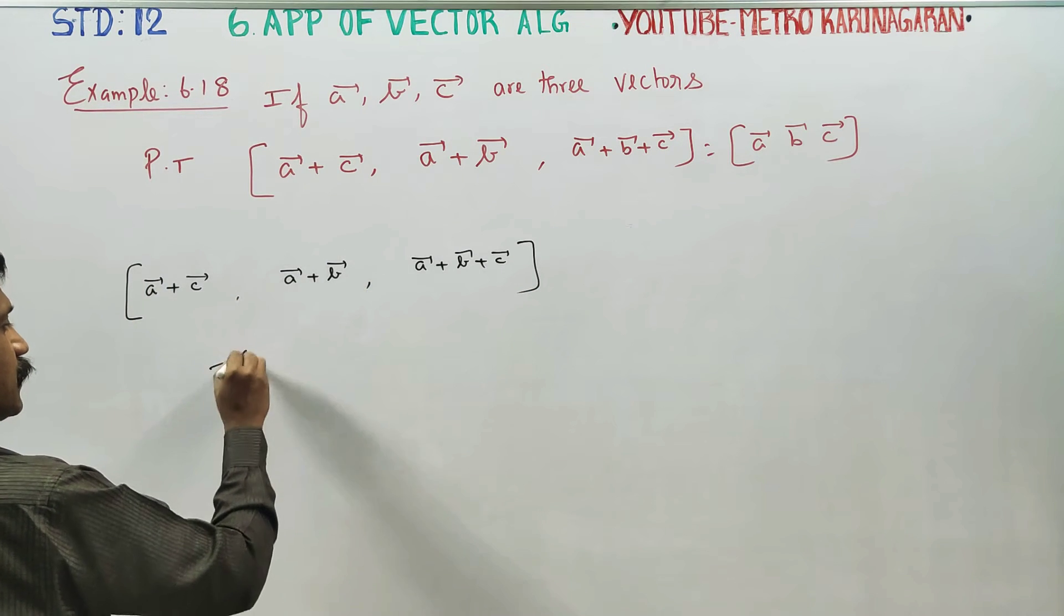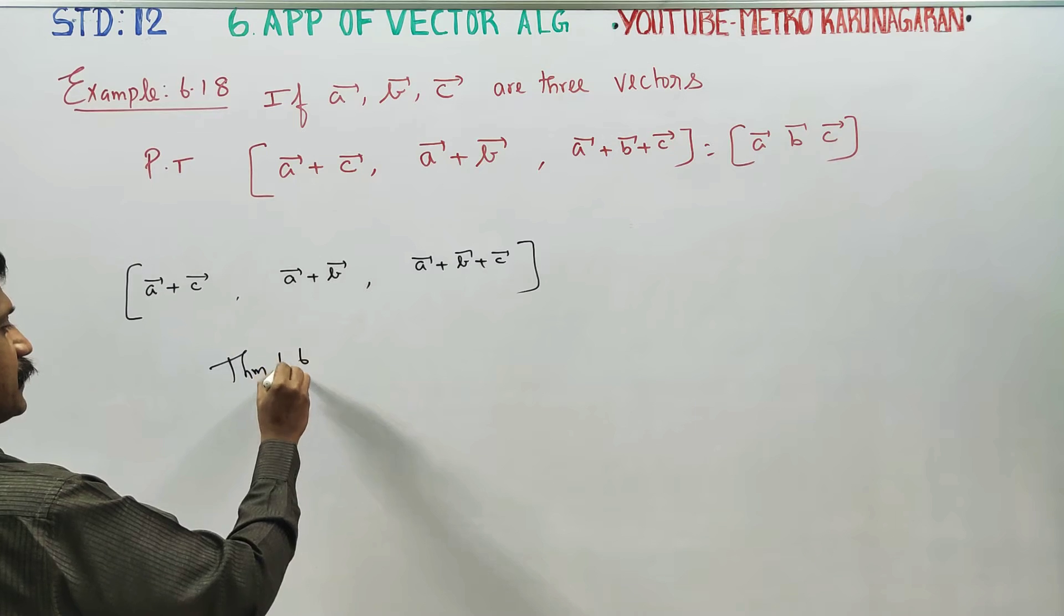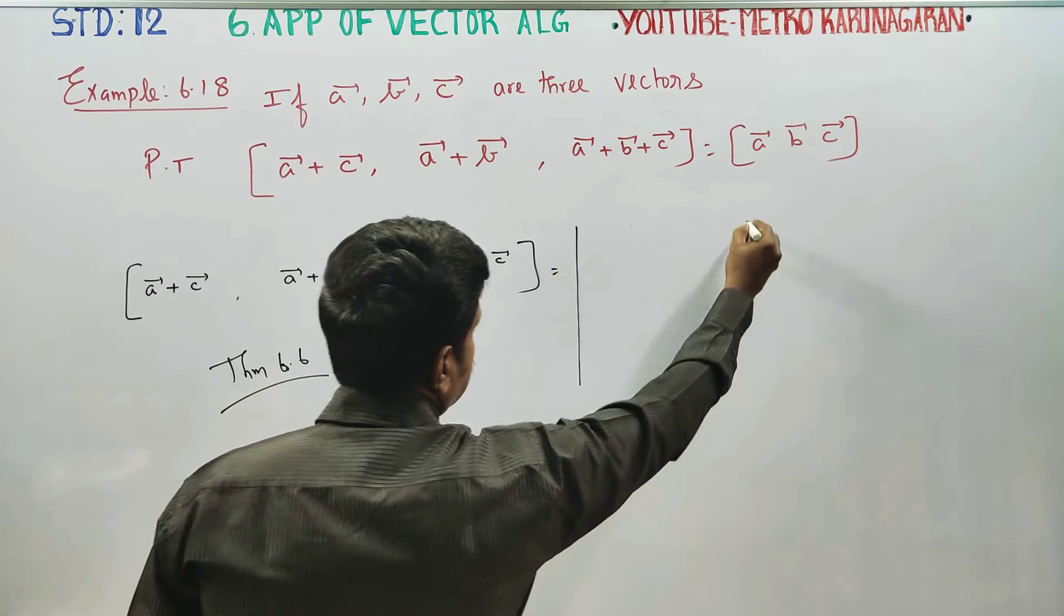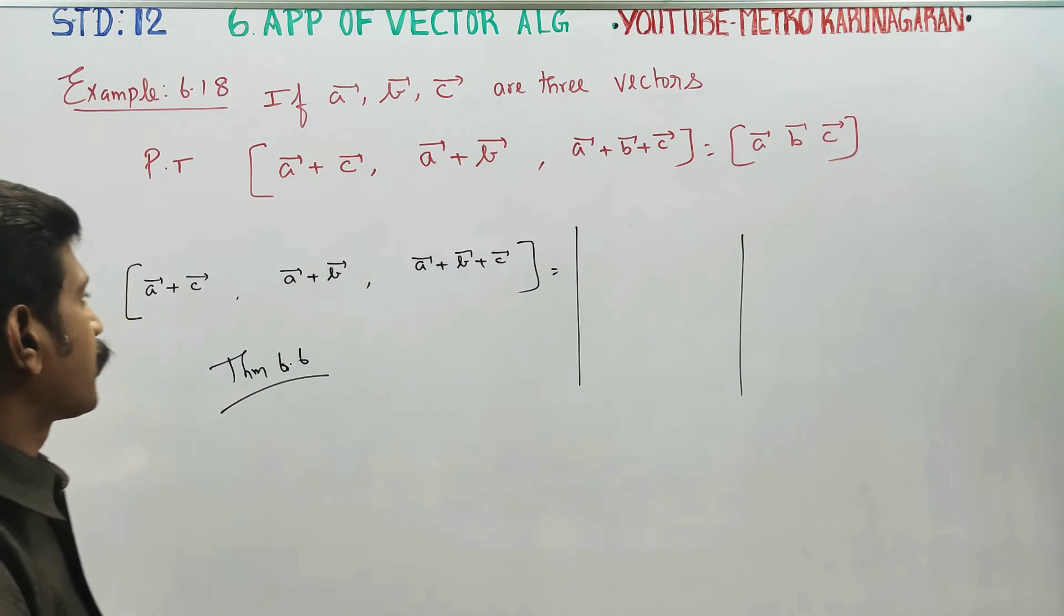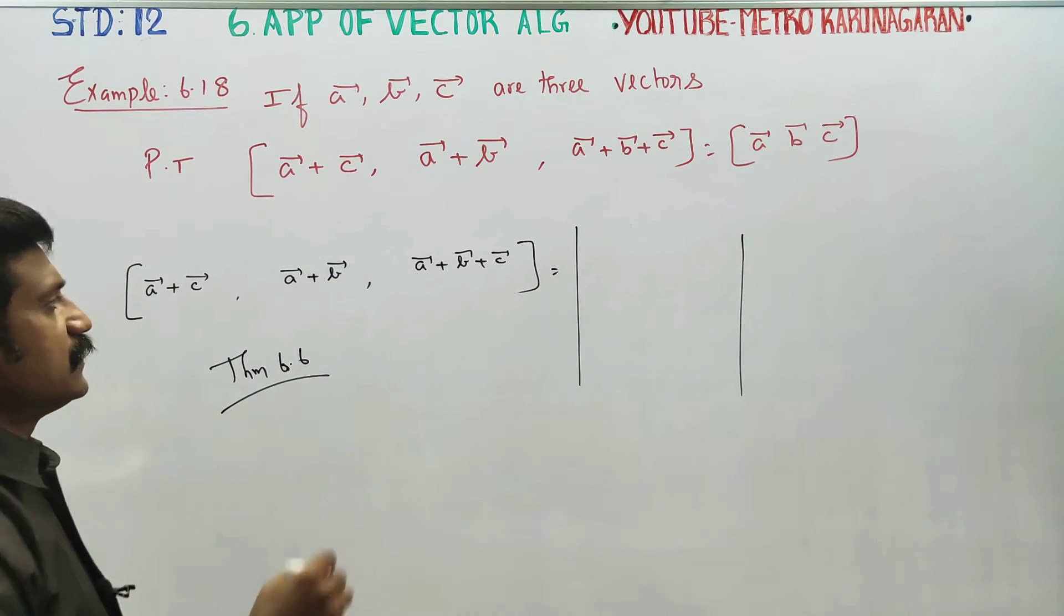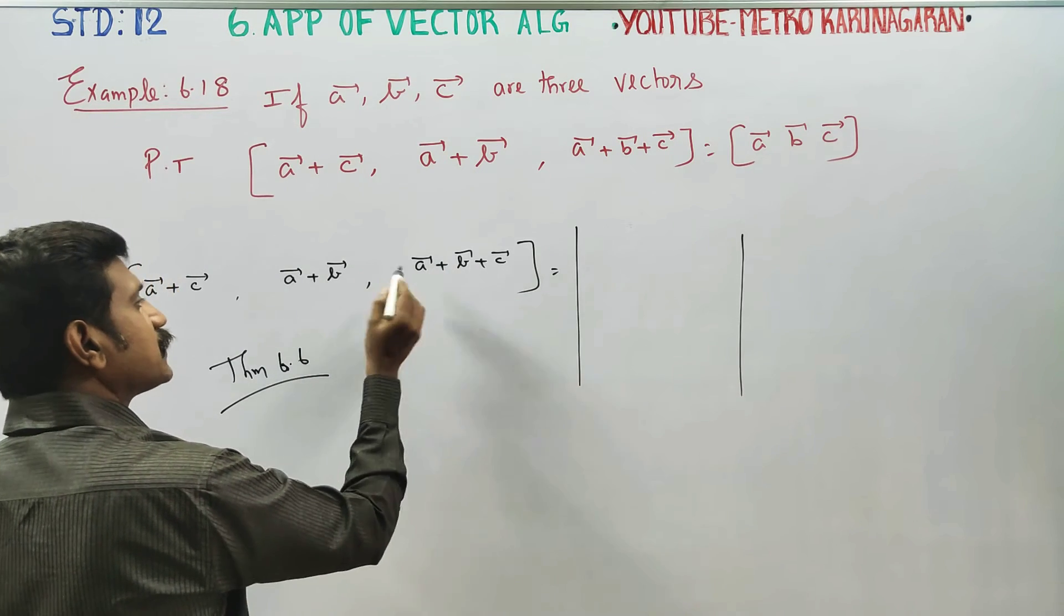We refer to the theorem 6.6. Scalar triple product of this is ABC vectors with some coefficients. What numbers are there?